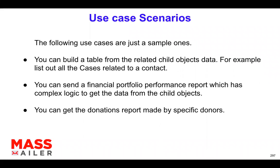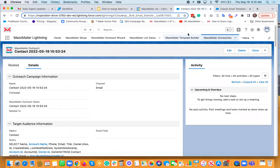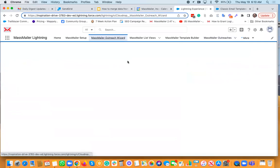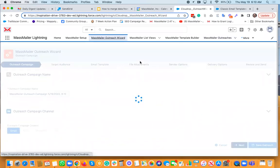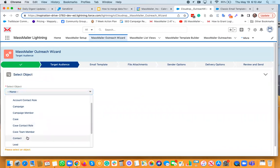Maybe you're sending a financial portfolio performance report and need data from child objects, or a donations report where you loop through all donations, or an email about multiple opportunities related to a contact. It could be anything where you need data from child objects. So let's take a look at how this actually works — I'll give you a quick demo by selecting a bunch of contacts, selecting an actual template, and sending an email, then I'll get into the details of the template.